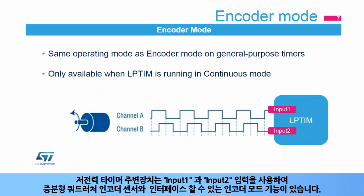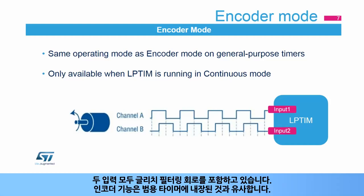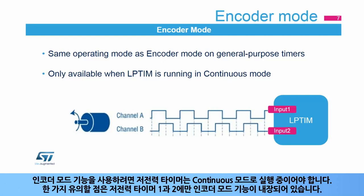The low power timer features an encoder mode function that can interface with incremental quadrature encoder sensors using the peripheral's input 1 and input 2 inputs. Both inputs feature glitch filtering circuitry. The encoder function is similar to the one embedded in general purpose timers. In order to use the encoder mode function, the low power timer must be running in continuous mode.